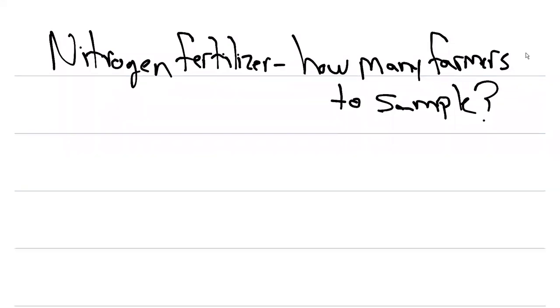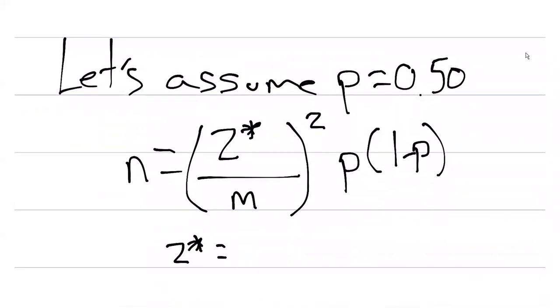We're going to assume that the probability of the proportion is equal to 0.5. This is a blanket way that we'll prescribe the proportion so that the margin of error is widest. We might not really know anything about the proportion, so let's just assume it's 0.5.